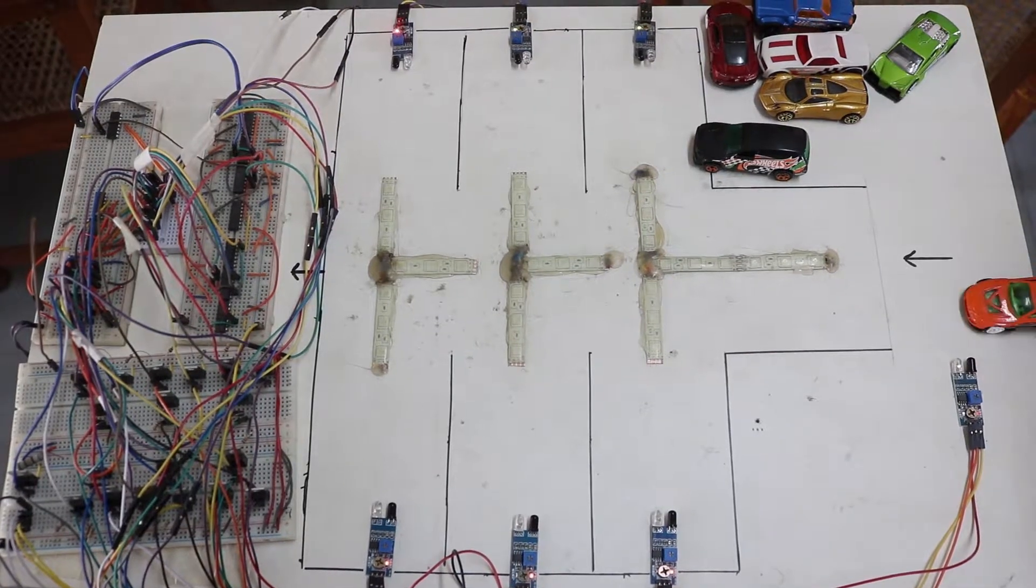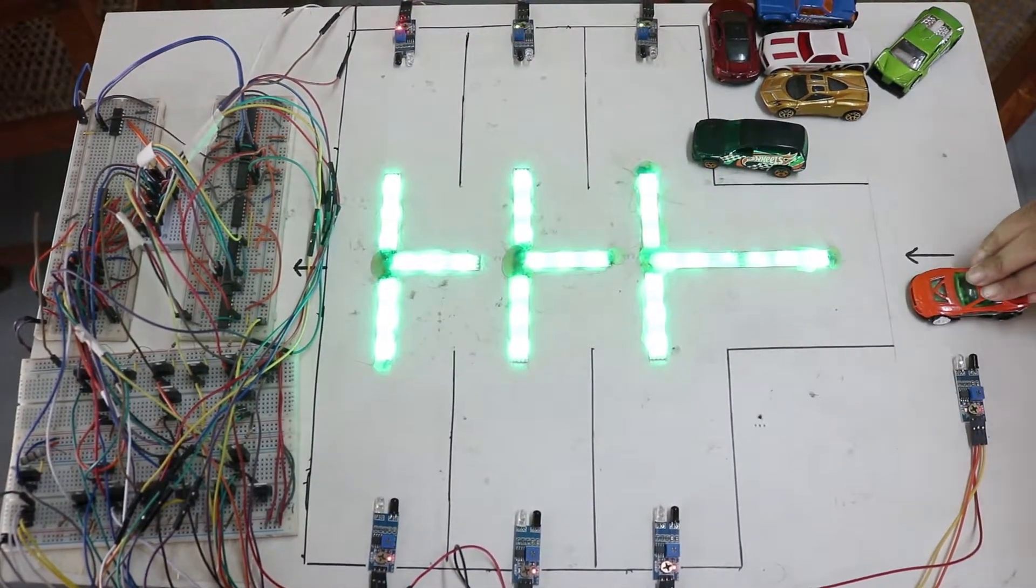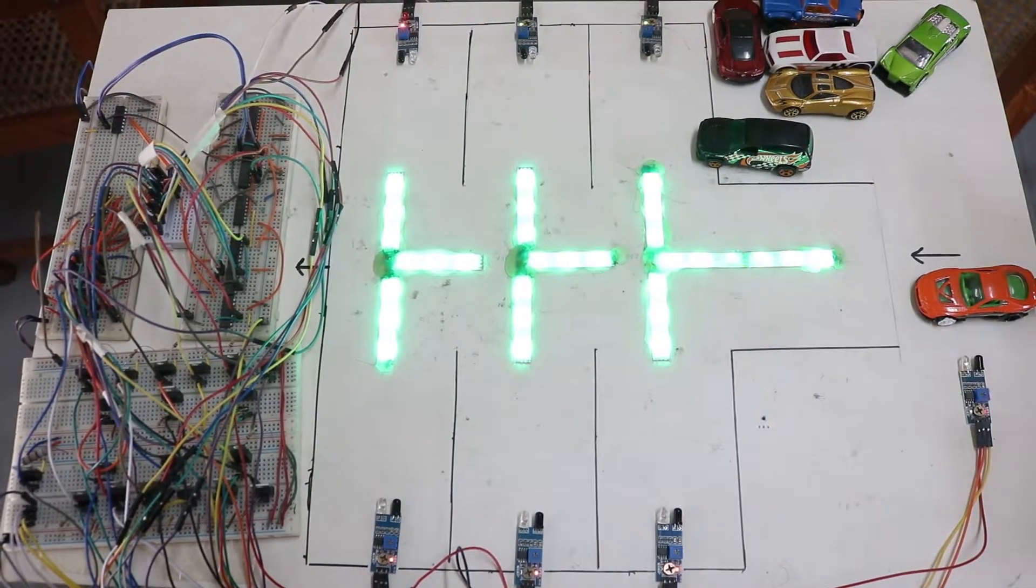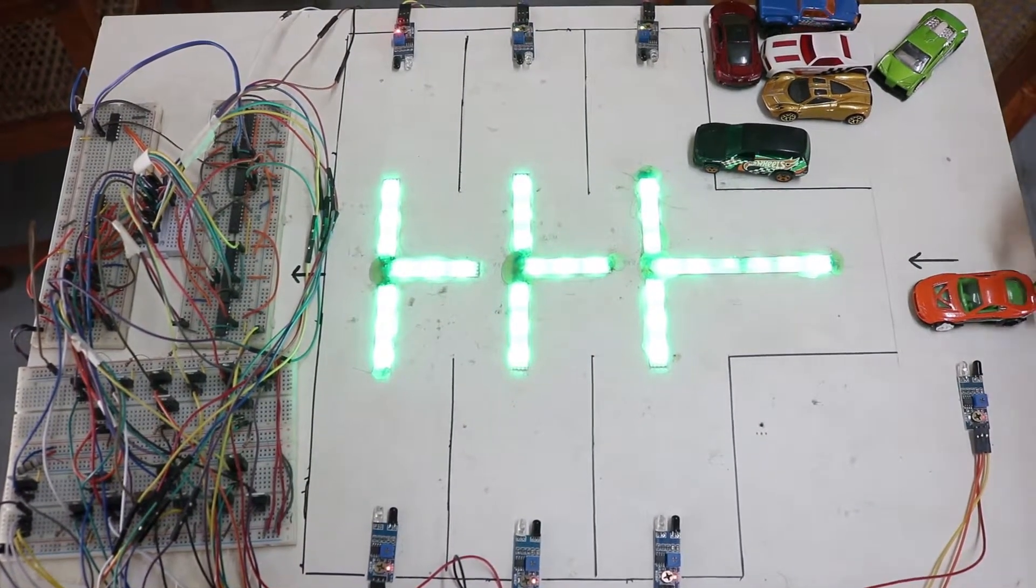Suppose a car comes here. We can see the lights are on, all are green, all parts are available for a car to park.